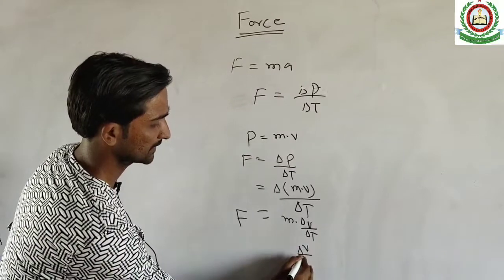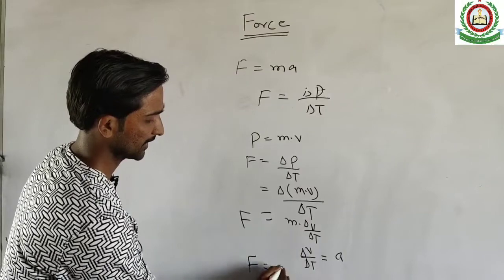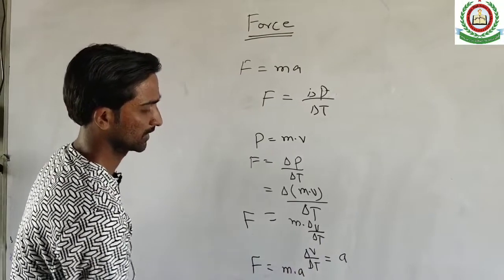Delta v upon delta t is equal to acceleration. Therefore we can write m dot a.